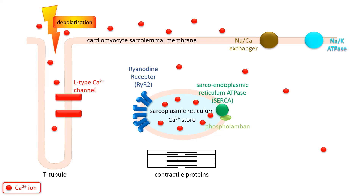Calcium is also removed from the cell mainly by the sodium-calcium exchanger, which exchanges it for sodium ions. This exchanger makes use of the large transmembrane gradient of sodium that facilitates its entry, a gradient set up by the sodium-potassium ATPase, or sodium pump.